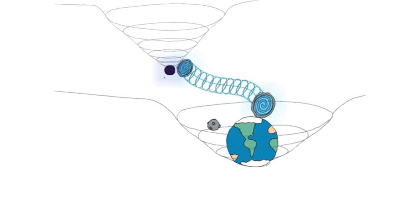General relativity allows the existence of shortcuts through spacetime, called wormholes, which could allow travel to the future and the past.